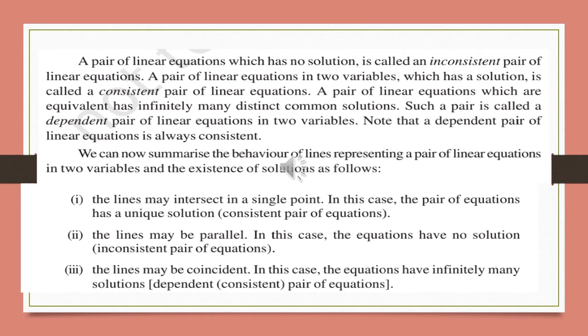We have seen three types of conditions based on the lines. If the lines are intersecting, there is only one solution and the system is called consistent. If the lines are parallel, there is no solution and the system is called inconsistent. If there are infinitely many solutions, the lines are coincident, and the system is called consistent — with the special name dependent.